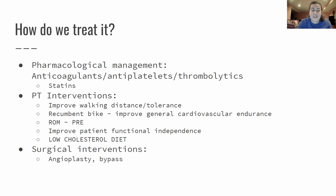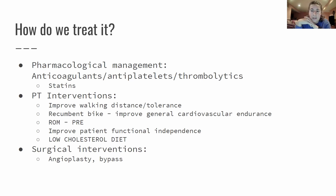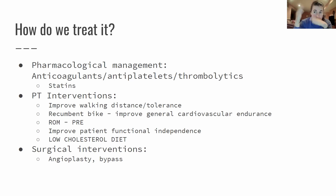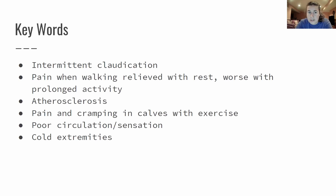Some surgical interventions include angioplasty, where they take a balloon, put it in and blow it up to push the plaque to the sides. That's done commonly in the heart, but with peripheral vascular disease it can be done in another part of the body. If it's so clogged, they'll do a bypass - taking a vein or another vessel from somewhere else and bypassing the area to redirect blood flow.